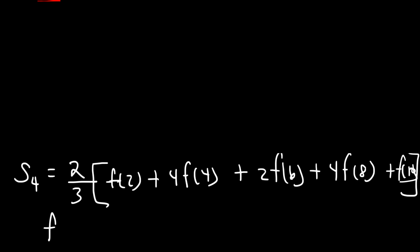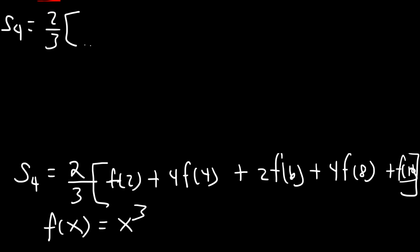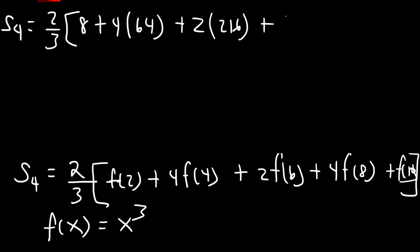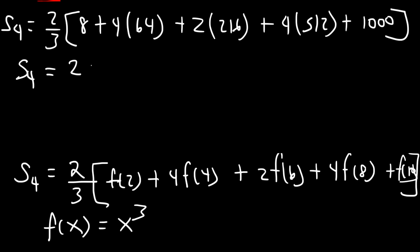Keep in mind f(x) is x³. So 2³ = 8, 4³ = 64, 6³ = 216, 8³ = 512, and 10³ = 1000. Go ahead and type in what you see. The value I got is 2496.